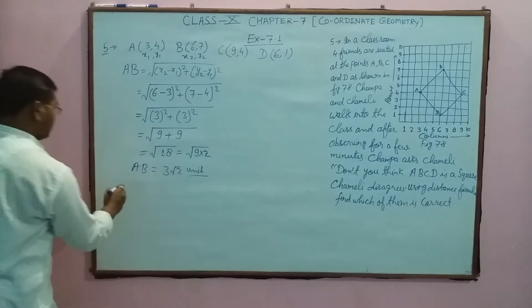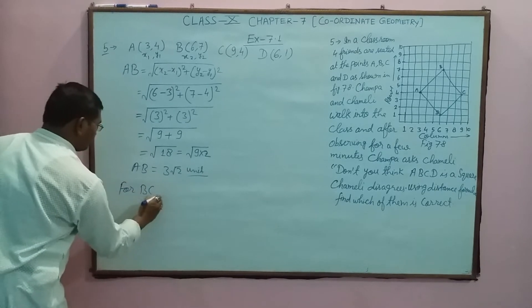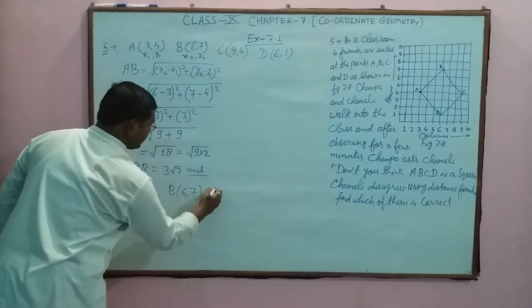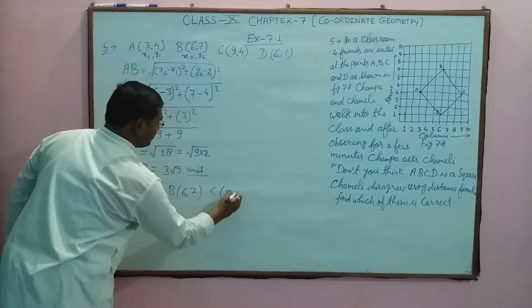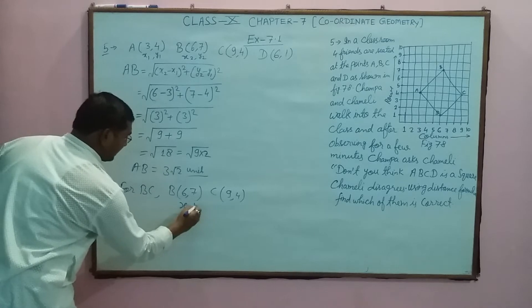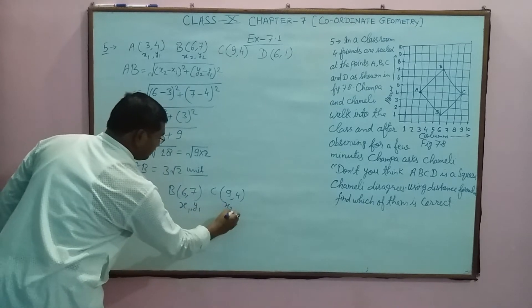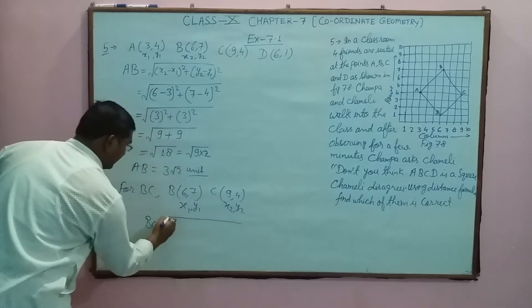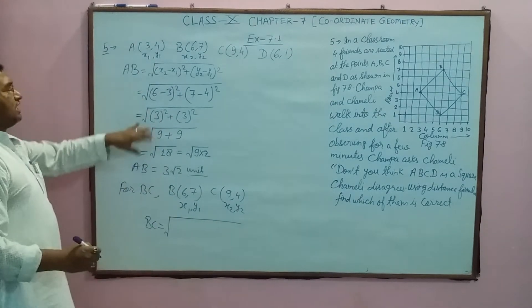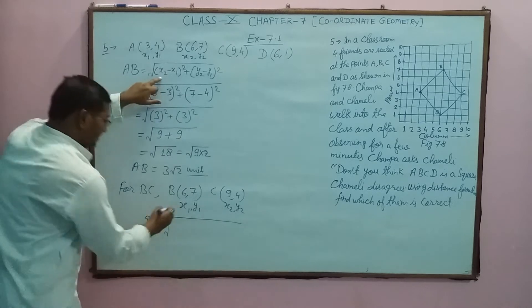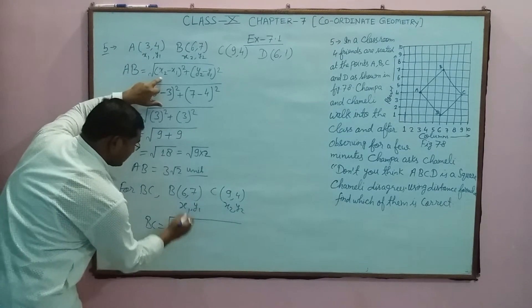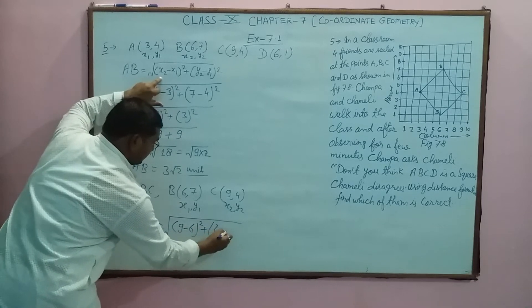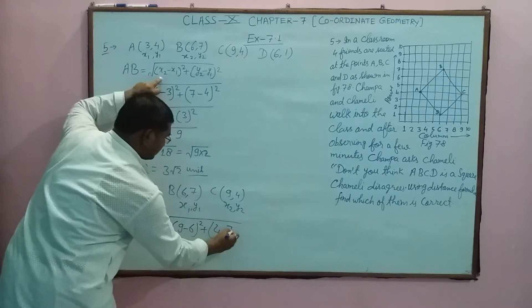Now find BC. BC, B coordinate is (6,7) and C coordinate is (9,4). Again, mention x1, y1 and x2, y2. Write BC equals distance formula. You will write it once in the whole question. x2 minus x1 means x2 is 9 minus x1 is 6, whole square of this, plus y2 is 4 minus y1 is 7, square of this.